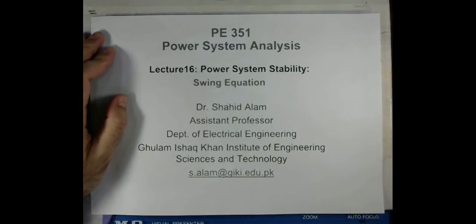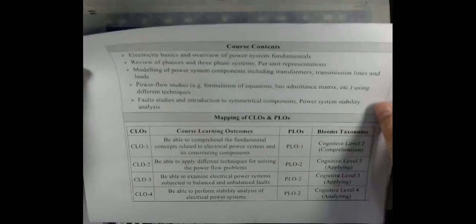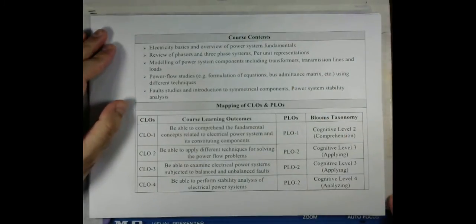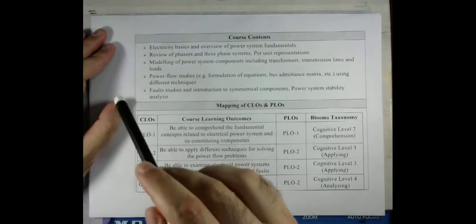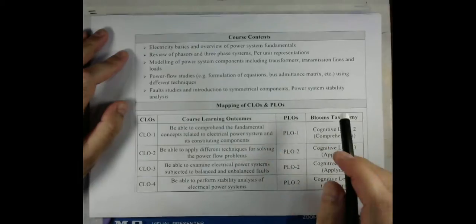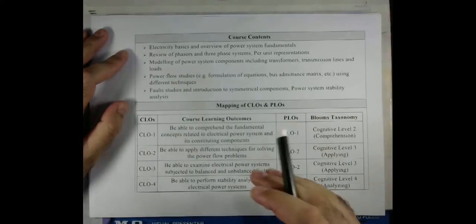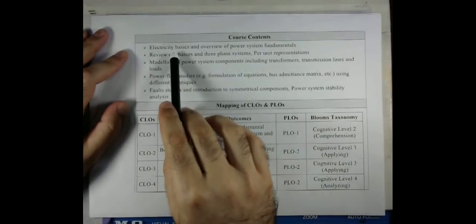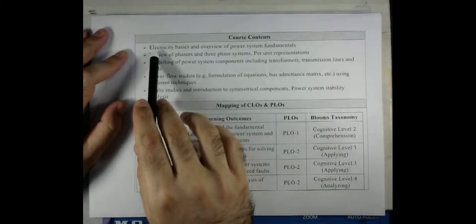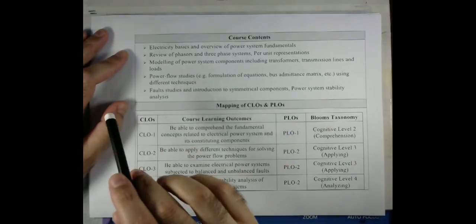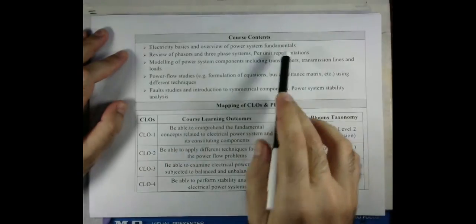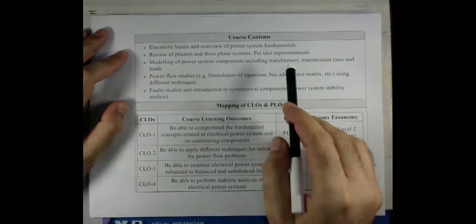Before starting the stability analysis, let me show you the course outlines, particularly the material related to course contents and learning objectives. Reading each point one by one will make clear where we are standing at the moment, what we have covered, and what we are supposed to cover. We started the course with electricity basics, an overview of power system fundamentals, phasors, three-phase systems, and then the per unit representation.